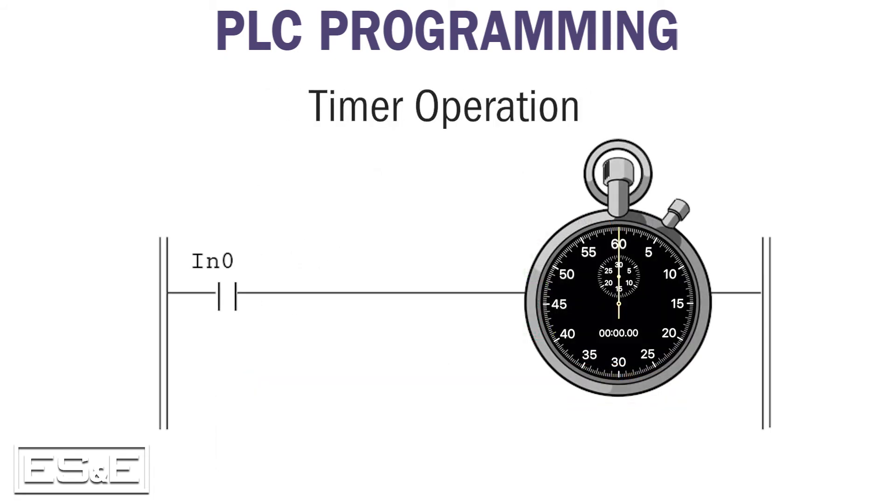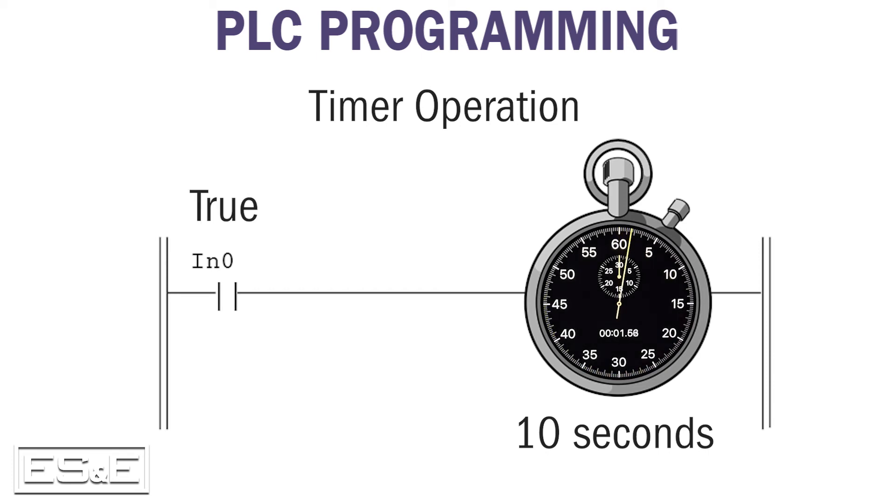A timer is the most complex instruction we will cover. As an example, let's say a motor is required to run for 10 seconds and then turn off. In that case, the timer preset value will be 10 seconds. As long as the input condition solves true, the accumulation value will increment until it equals the preset value. At that point, the timer done bit, also referred to as the DN bit, will change from 0 to 1. When the input condition for the timer solves false, the timer accumulation value resets to 0, and the done bit is also set to 0. This can happen before or after the accumulation value equals the preset value. Understand there are multiple types of timer instructions that operate differently than what I just described.